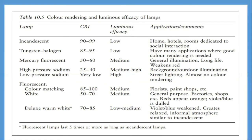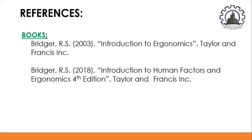Table 10.5 summarizes color rendering properties and applications for different commercially available lamps. For example, incandescent lamps have a CRI of 90–99 with low luminous efficacy, applicable at home, hotels, and rooms dedicated to social interactions. Mercury fluorescent lamps have a CRI of 50–60 with medium luminous efficacy, applicable for general illumination. Thank you for watching. If you have questions, please let me know in the comment section below, and if you like this video, please subscribe and hit the bell button for the latest updates.